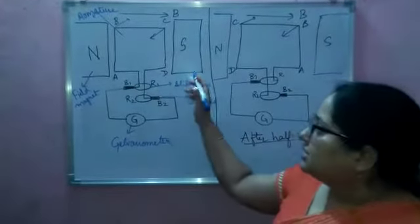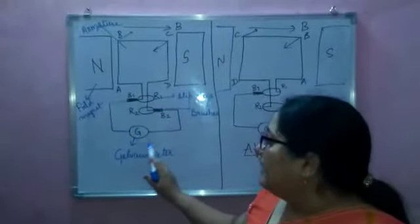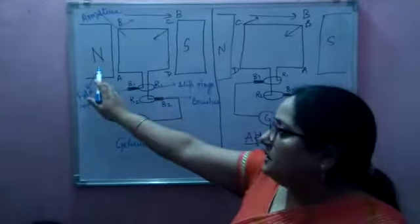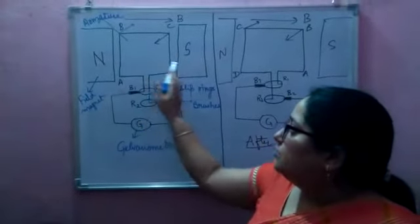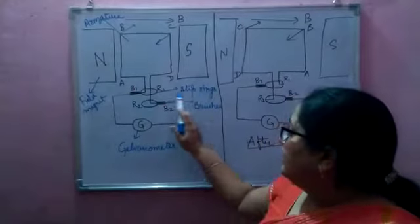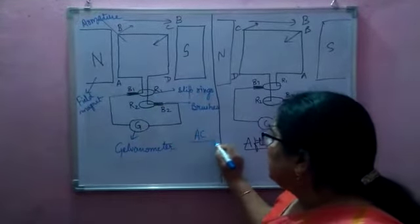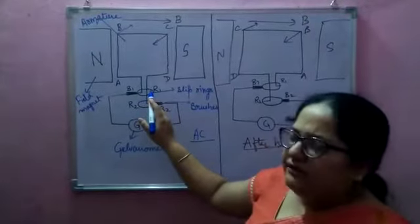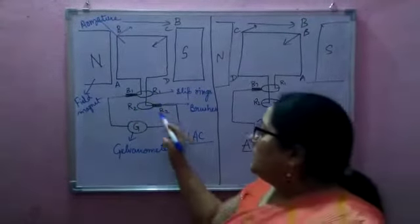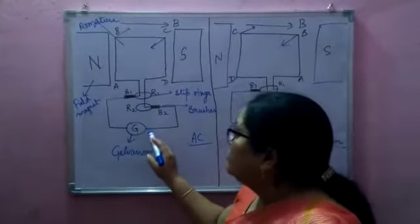The construction is similar to the AC motor, but here in place of a battery we have a galvanometer. We have an armature which is kept inside between the two magnets — that is called the field magnet. Then we have slip rings because it is an AC generator. In a DC generator, it would be split rings. These two are brushes, and then the outer circuit is connected with a galvanometer.